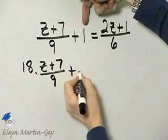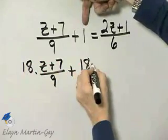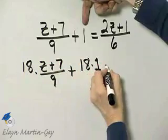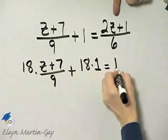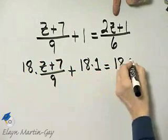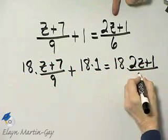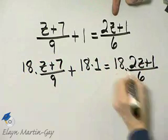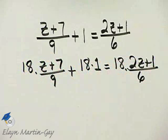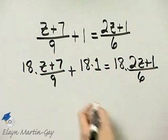We must multiply this 1 by 18, and then also 18 times 2z plus 1 over 6, and that is a multiplication sign there. So every single term must be multiplied by 18.